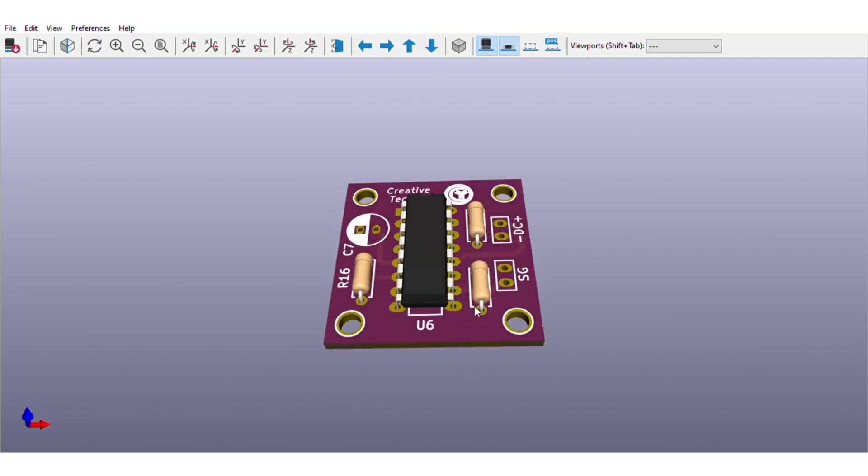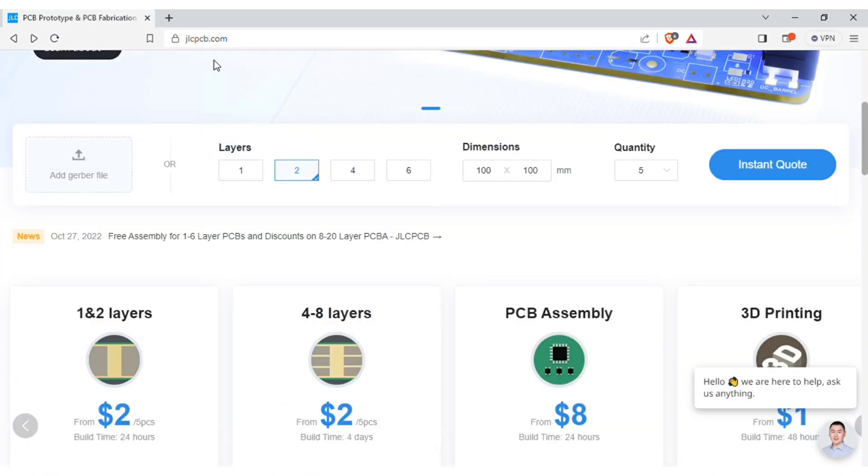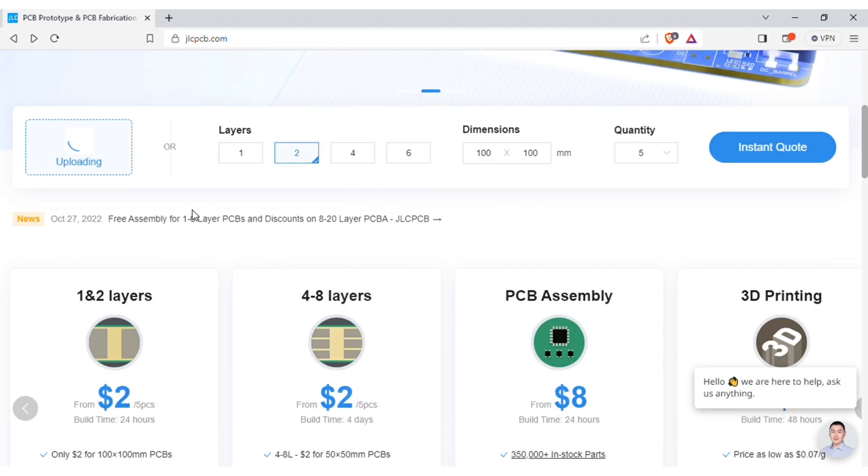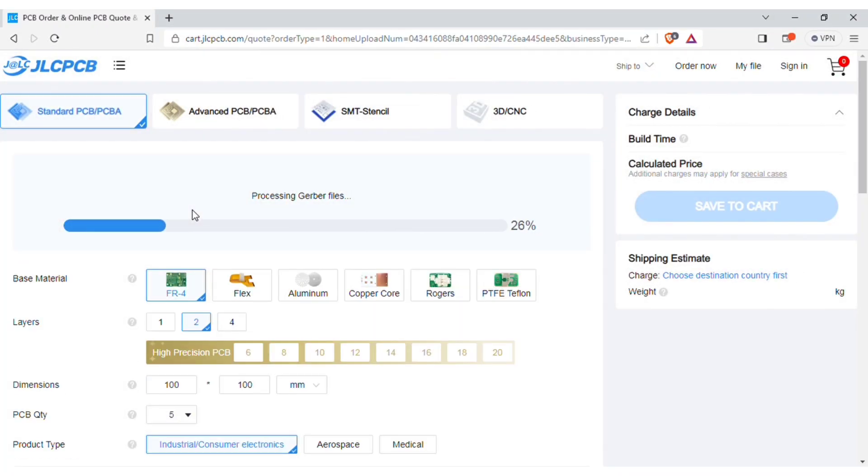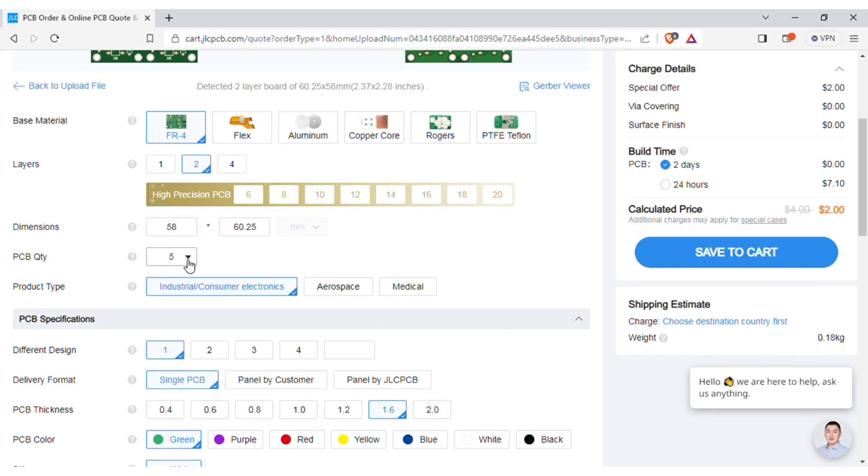in video description. In order to manufacture this PCB, visit JLCPCB.com and here you can add the Gerber file I provided. After uploading, you can see the preview of the PCB. You can also change quantity and the color of PCBs as per your requirements and then save to cart for checkout.